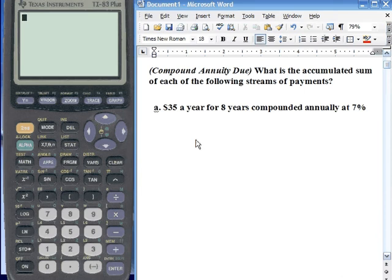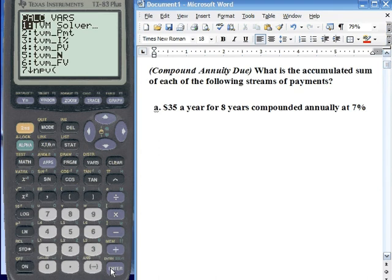Okay, here it goes. The question is, what is the accumulated sum of each of the following streams of payments? We got $35 a year for 8 years compounded annually at 7%. How are we going to find this? We got to go to Applications, then we got to go to Finance, and then we got to go to Solver.